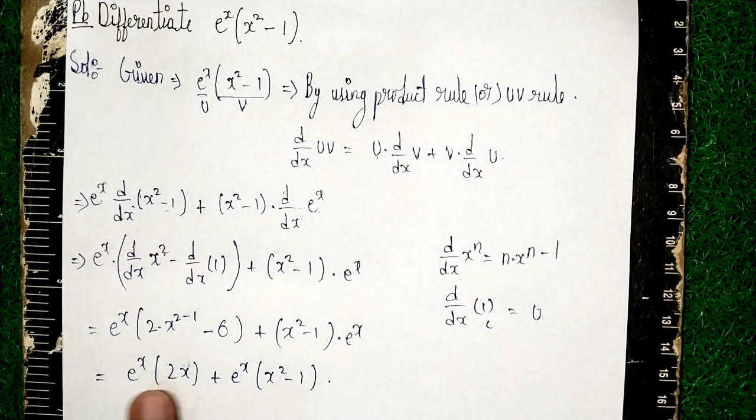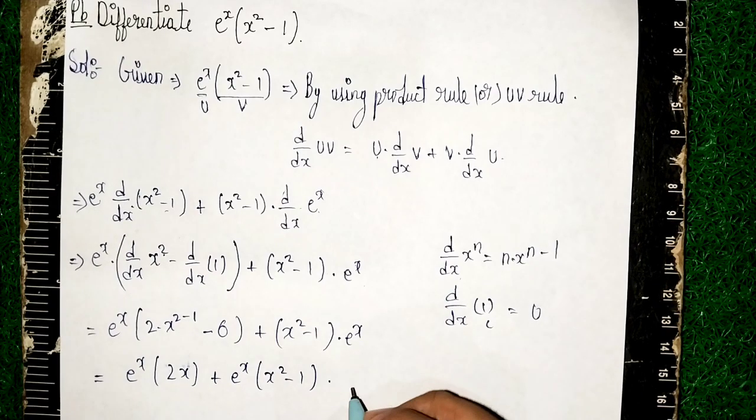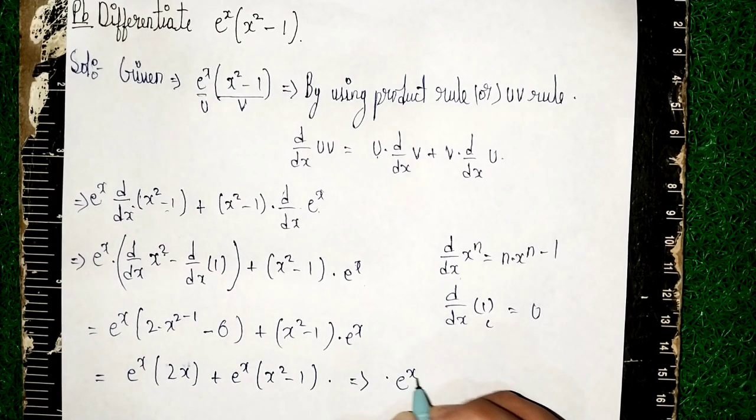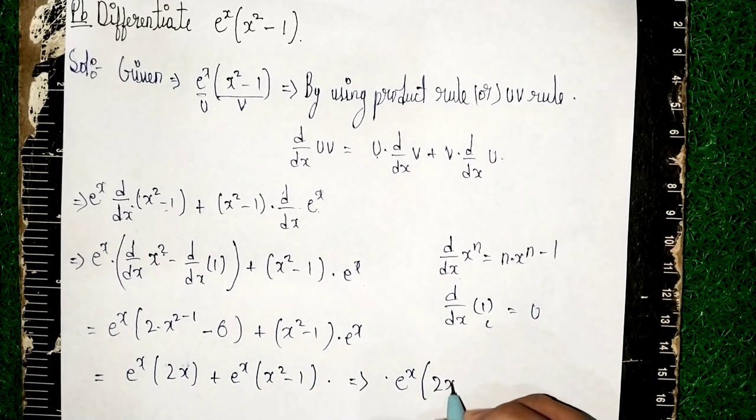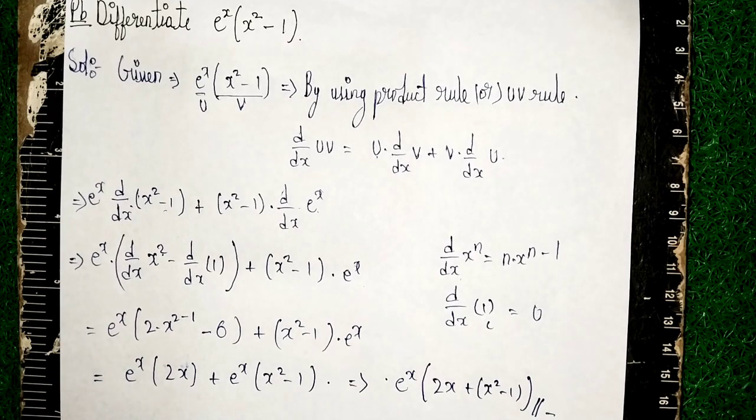So here what we will see, we can take e^x as common here. So our answer is e^x take it as common. e^x into bracket 2x plus x^2 - 1. So this is our solution, this is our answer. Thanks for watching.